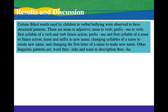Words used by children in verbal bullying were observed to have structural patterns. These are: noun to adjective, noun to verb, prefix ma (M-A) to verb, first syllable of a verb and a verb denoting future action, name and suffix to new name, changing syllables of a name to create a new name, changing the first letter of a name to make a new name, and other linguistic patterns like a word plus taka, and noun to description plus ka.